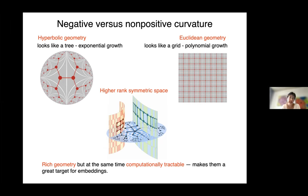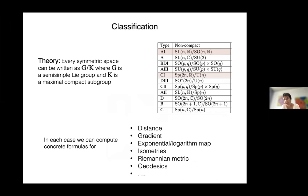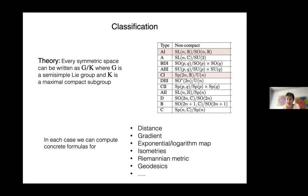Symmetric spaces are completely classified up to products. They can be written as homogeneous spaces G/K, where G is a semisimple Lie group and K is a maximal compact subgroup. The classical families are listed as quotients of matrix groups, along with a finite list of exceptional symmetric spaces.